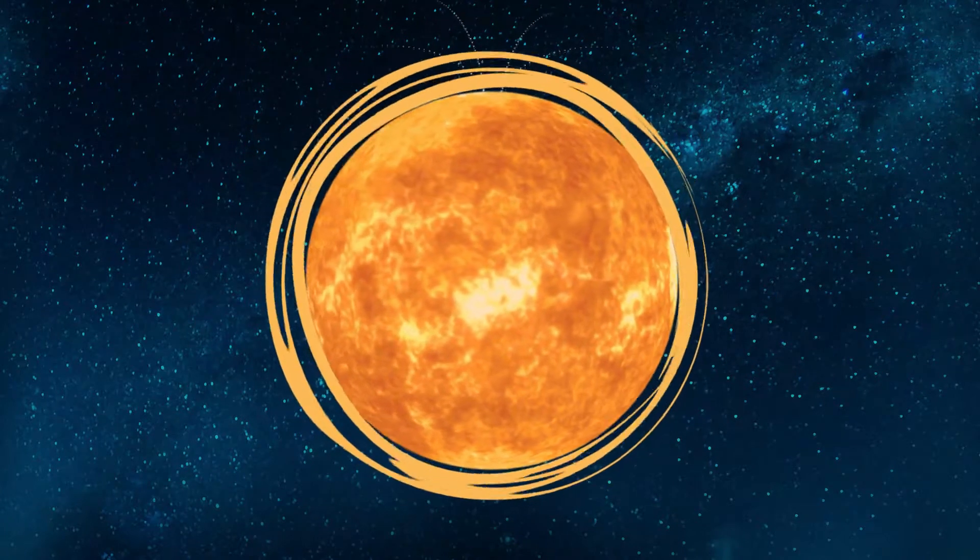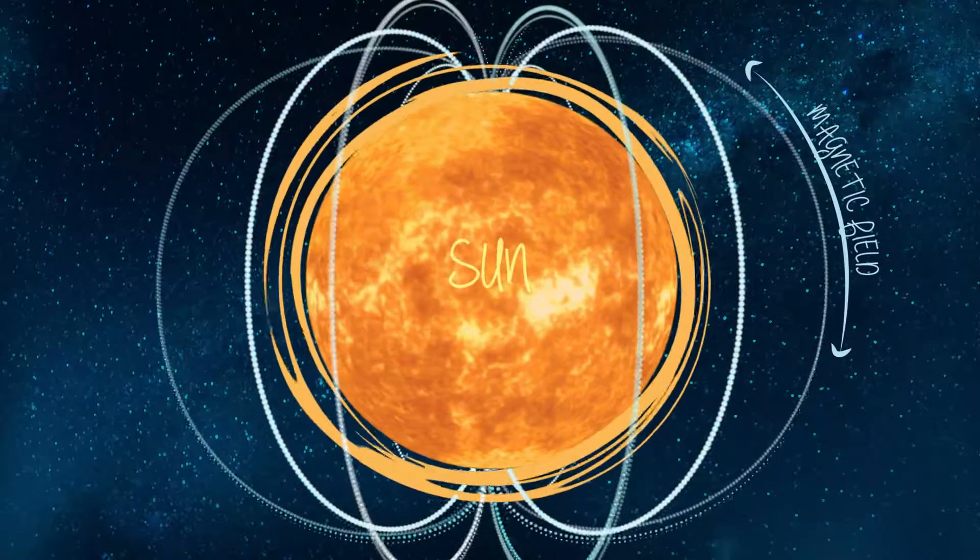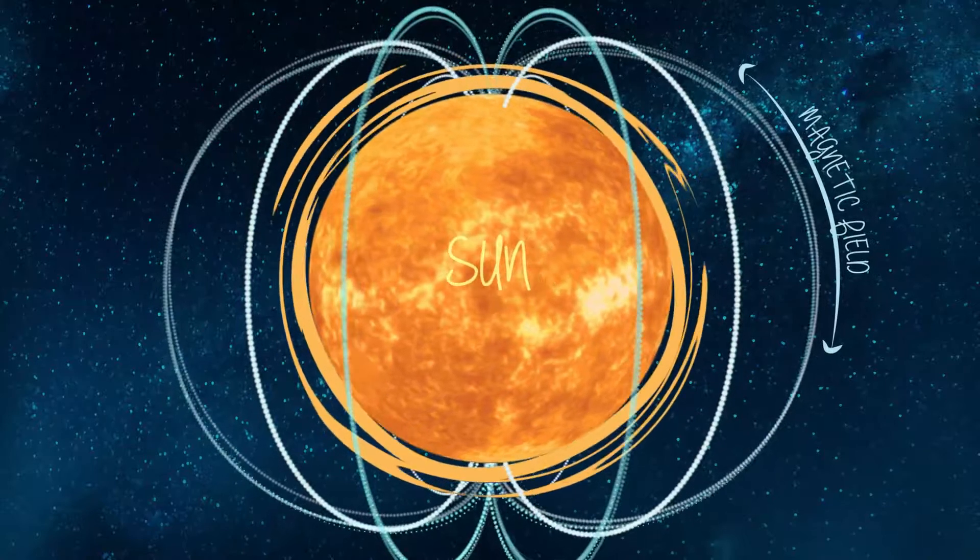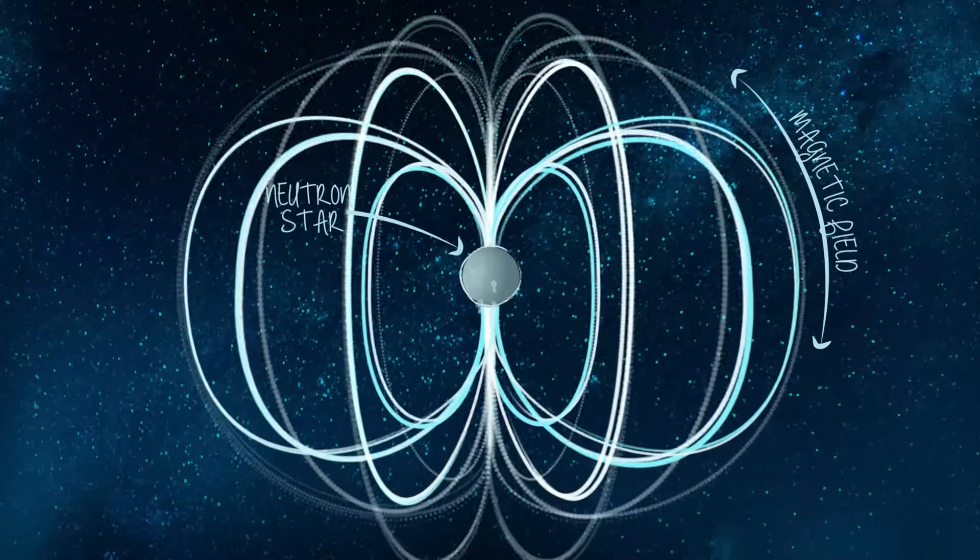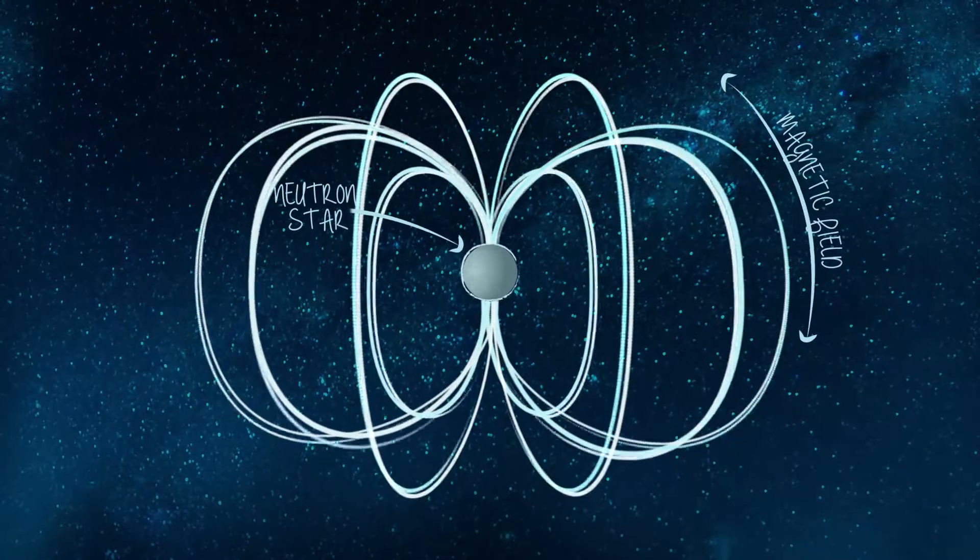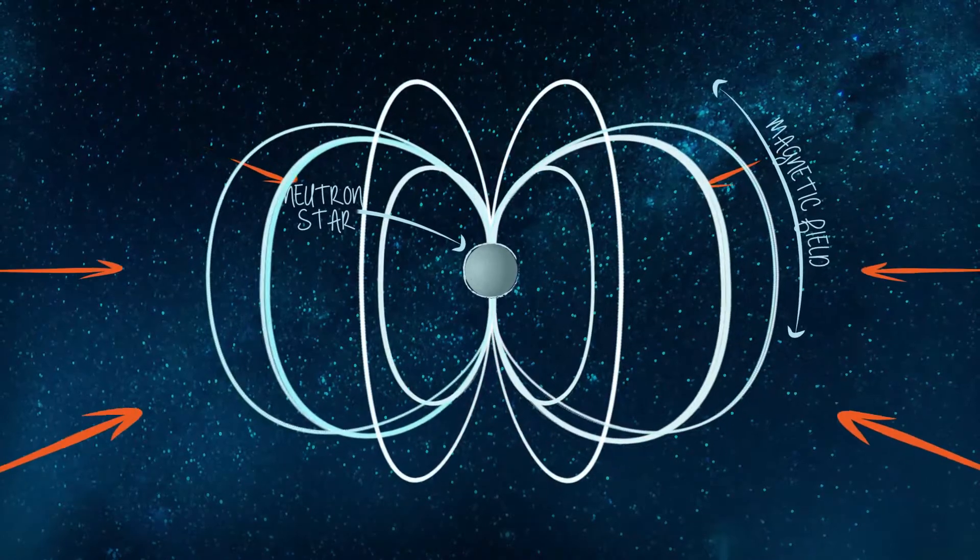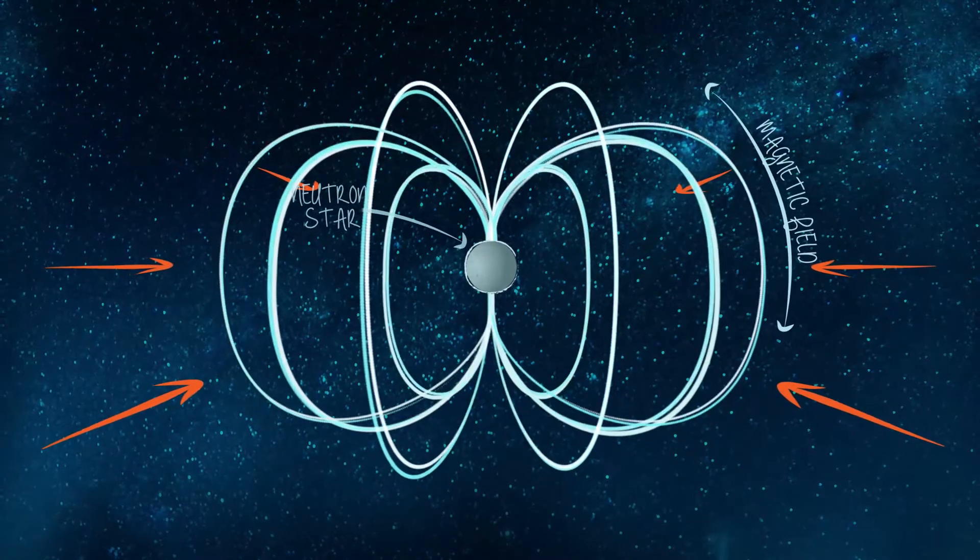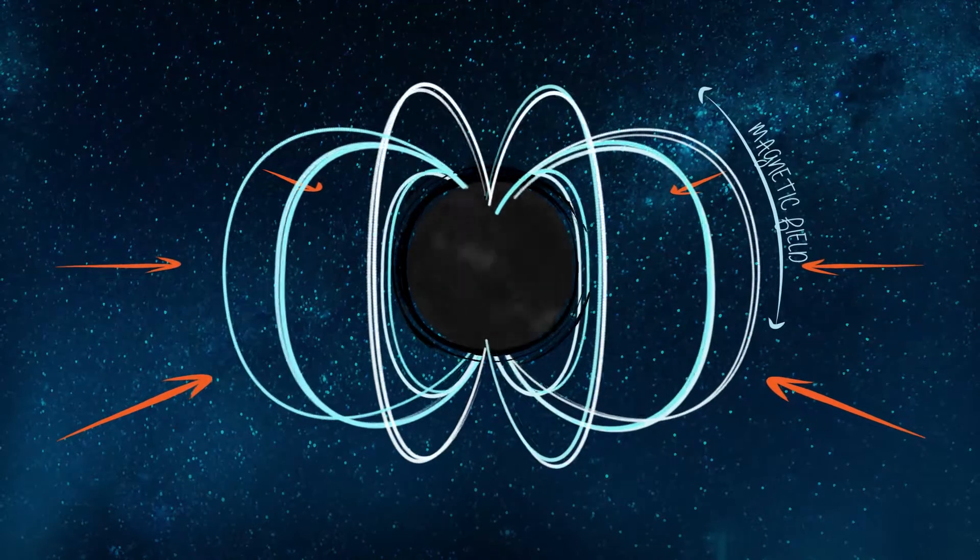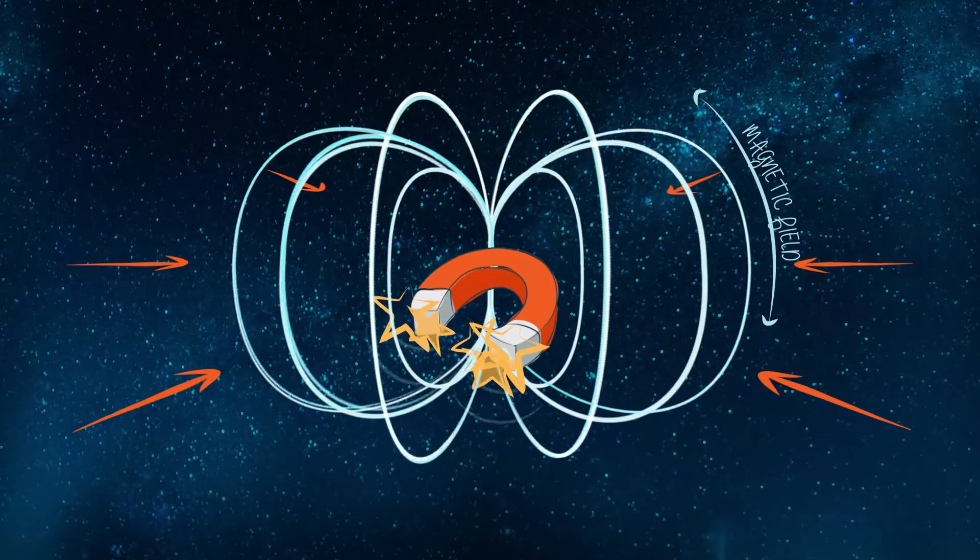Neutron stars are the most extreme stars imaginable, made by compressing a star like our Sun to the size of a small city. This incredible density gives a neutron star an enormous gravitational pull, rivaled only by that of black holes. It also turns them into the strongest magnets known in the universe.